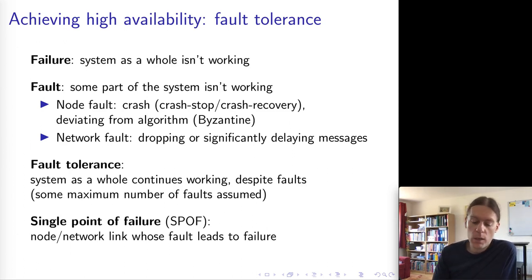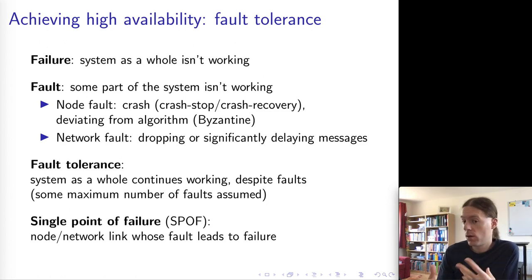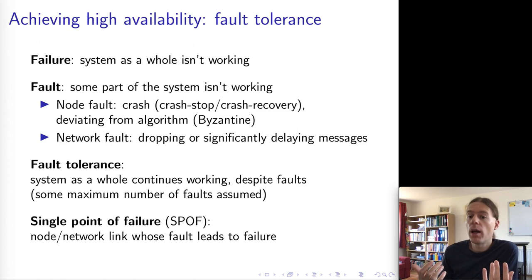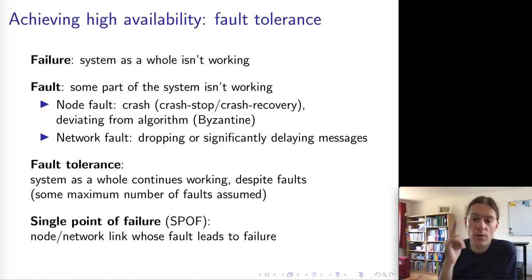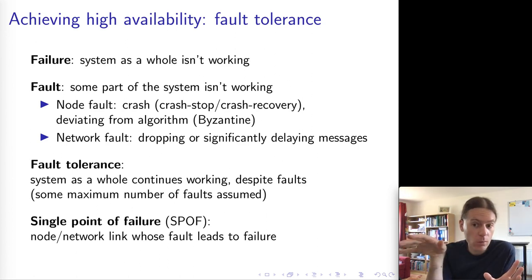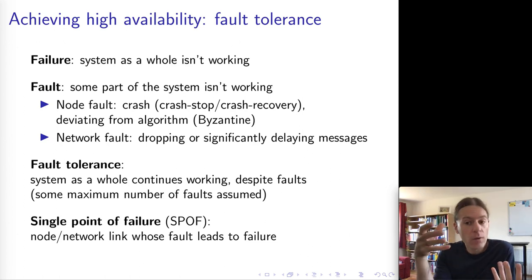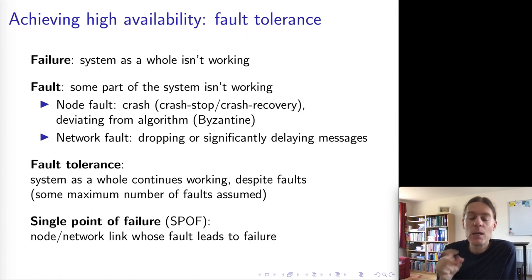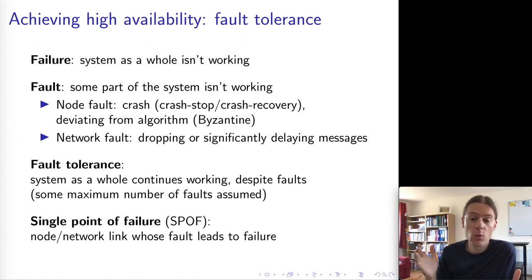In a system where some nodes or network links are allowed to be faulty, we avoid what is called a single point of failure. A single point of failure would be one node such that if that node crashes, the system as a whole becomes unavailable. If we design a system without a single point of failure, we can take out any one component and the system as a whole will hopefully still continue working.